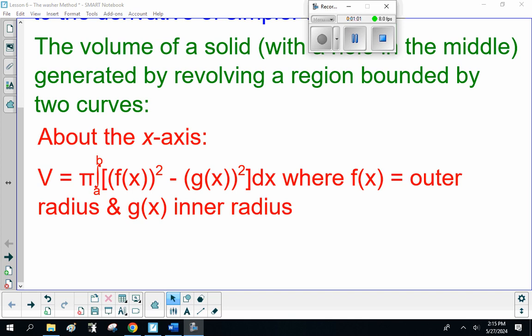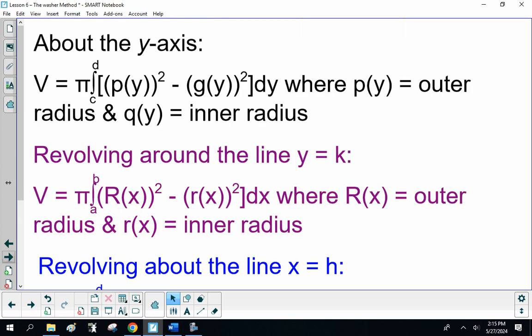Now, that's a simple formula. If it's about the y-axis, volume is π times the integral from c to d of [p(y)² - q(y)²]dy, where p(y) is the outer radius and q(y) is the inner radius.